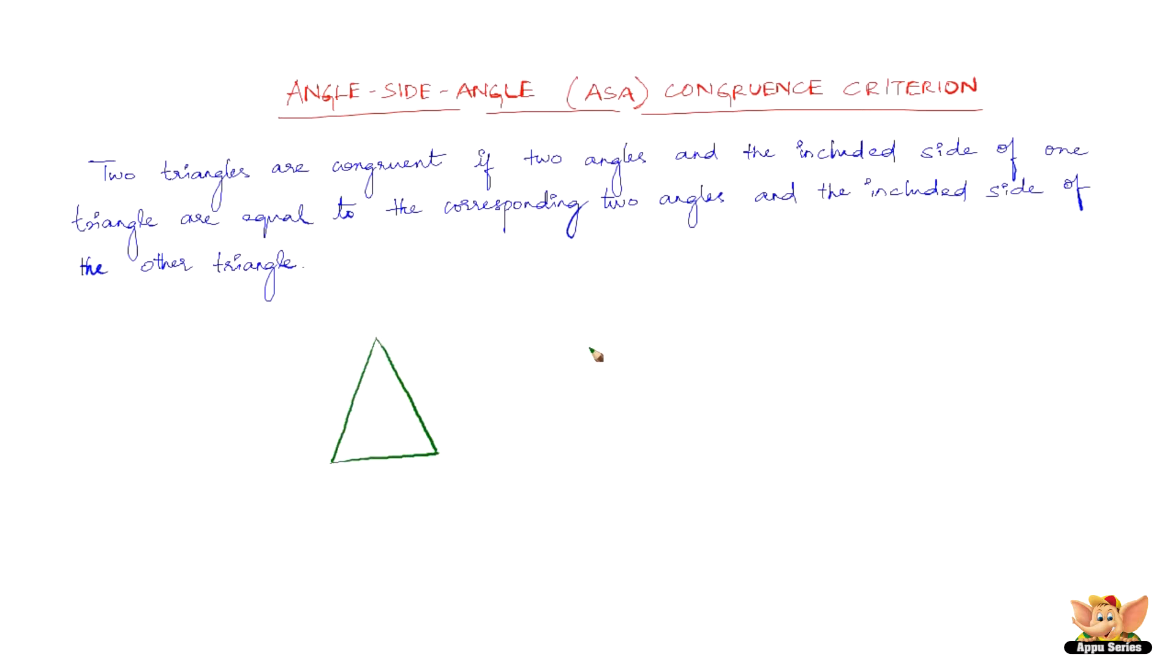Now we just have to validate this or prove this with the help of these two figures. We've got two triangles ABC and DEF where we can clearly see that there are two angles that are equal. Angle B equals angle E and angle C equals angle F, and BC equals EF.